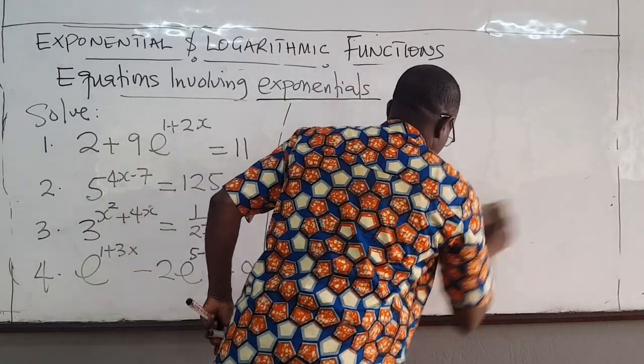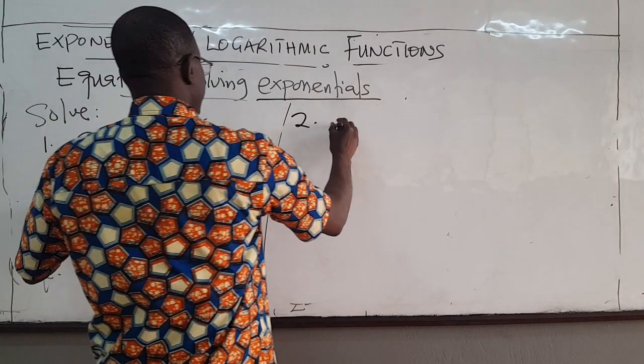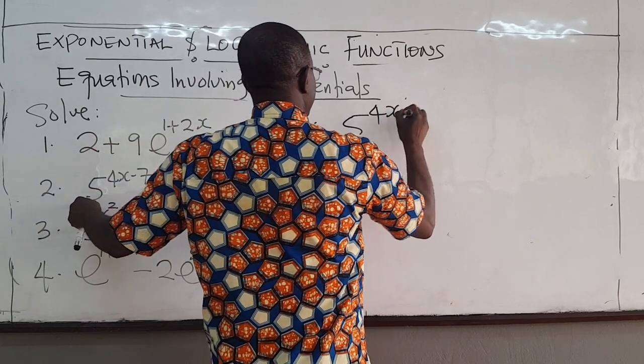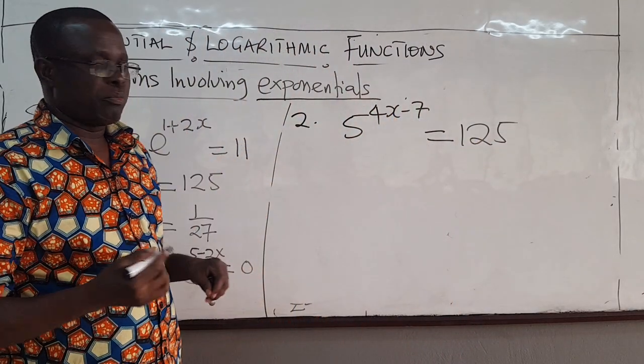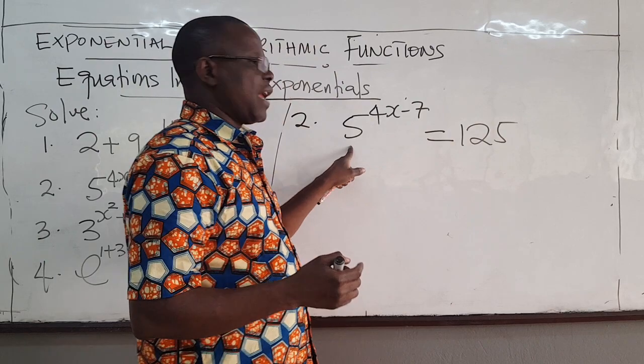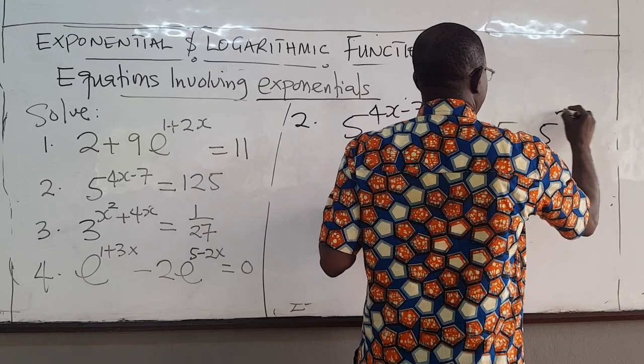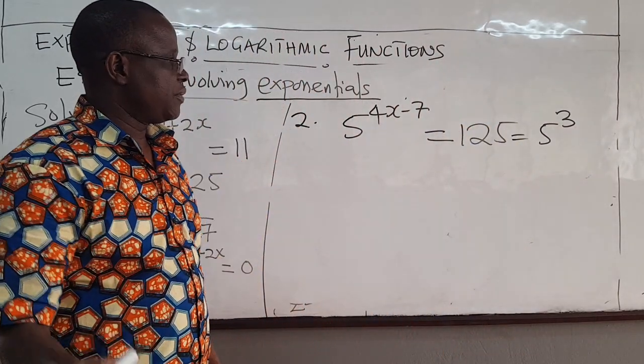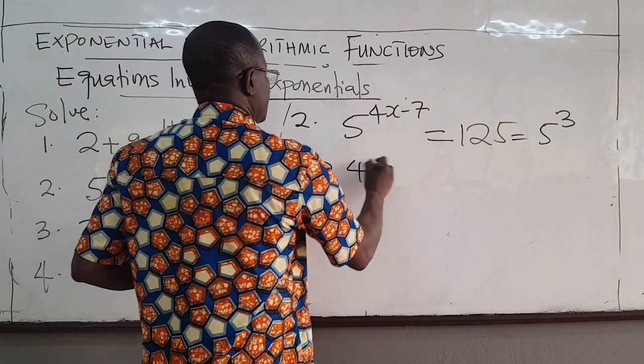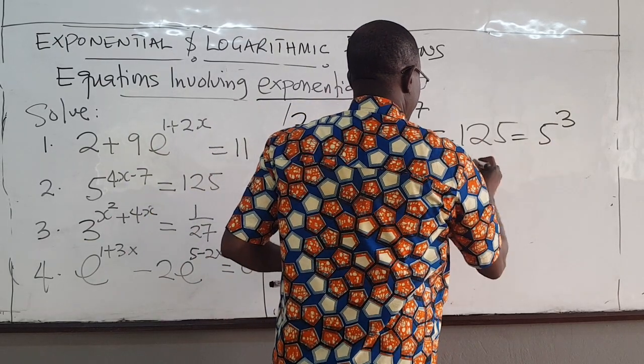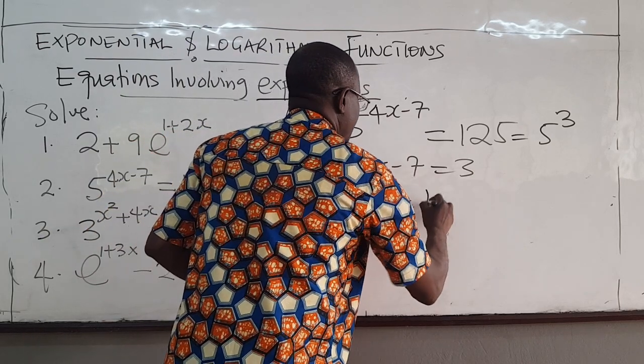Let's do question 2. Question 2, you'll have 5^(4x-7) = 125. The point is to try to make this the same base as that. 125 is the same as 5 raised to the power of 3, right? 5 times 5 times 5. Which means 4x - 7 should equal 3.